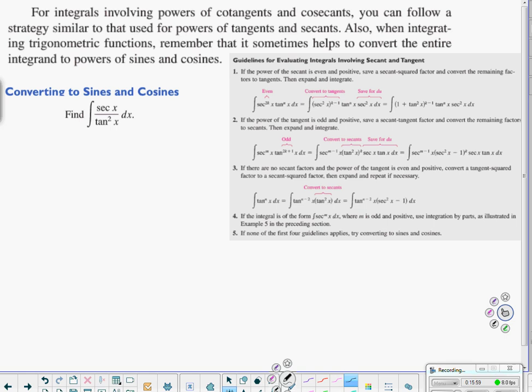And then this last one says, for integrals involving powers of cotangent and cosecant, you can follow a similar strategy to those used for powers of tangents and secants. Also, when integrating trigonometric functions, remember that sometimes it can be helpful just to convert the whole thing into sine and cosine. Which is what we're going to do on this one. I know a lot of these talked about even and positive exponents. In this case, my exponent would actually be a negative 2 for that tan. So, the rules just don't apply so well. If all else fails, go back to the basics.